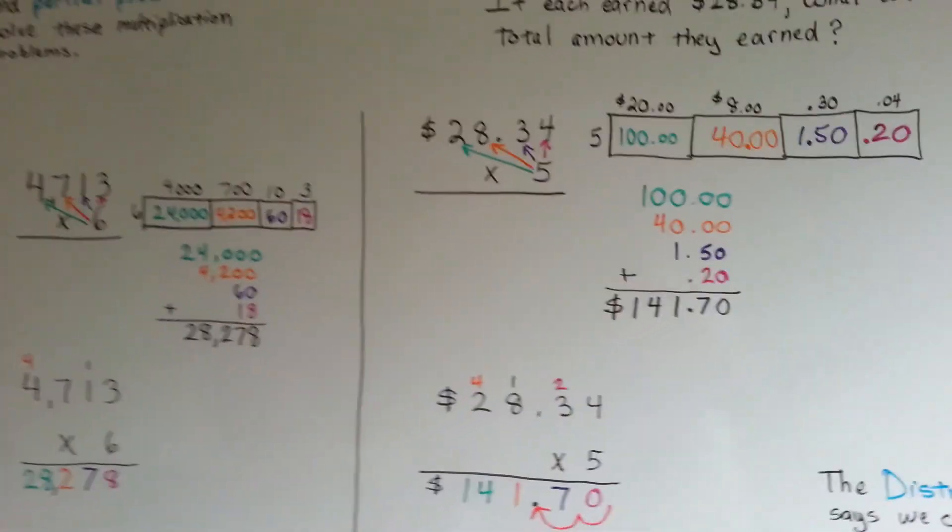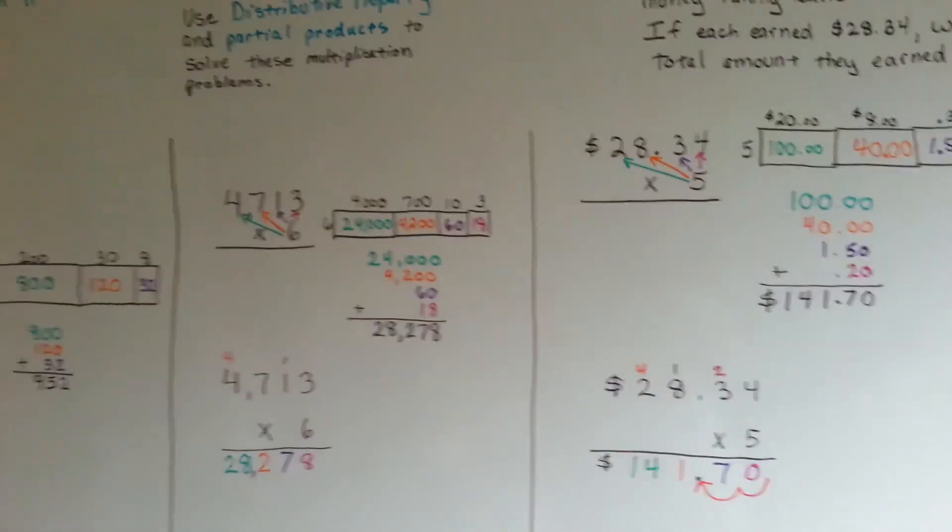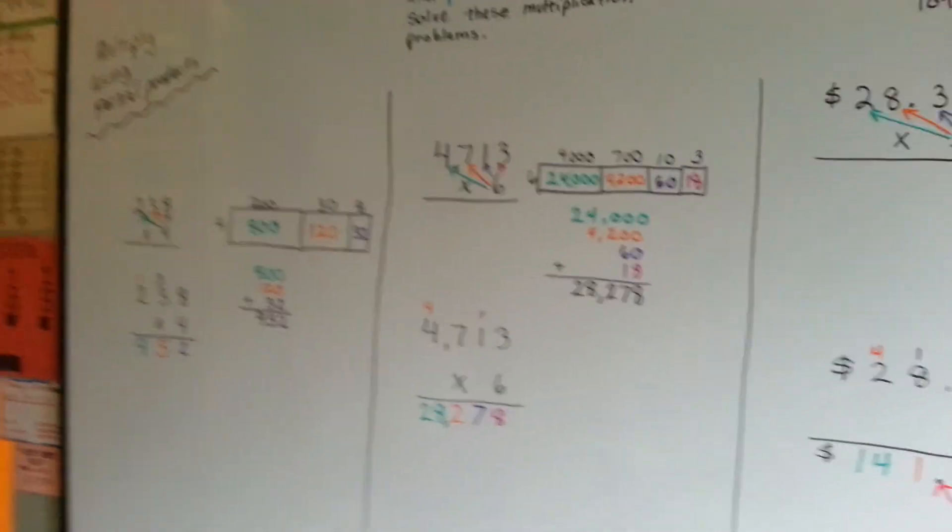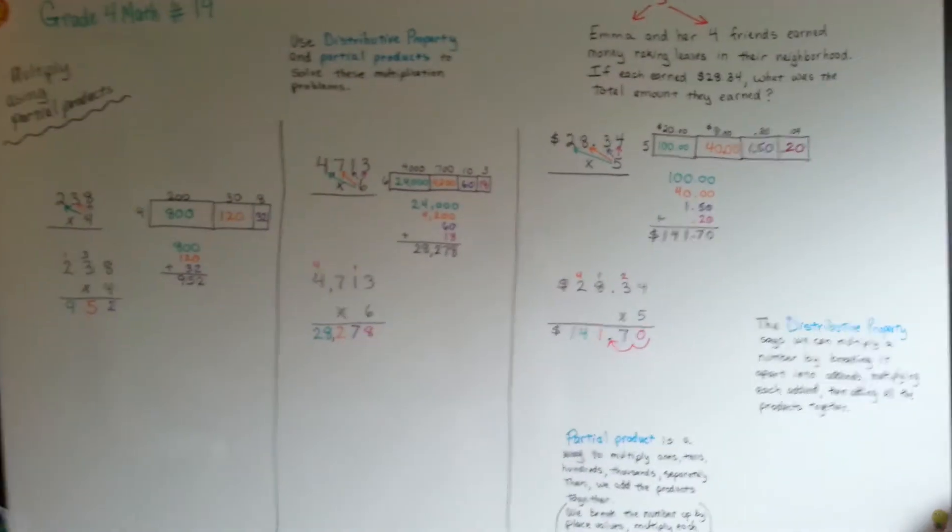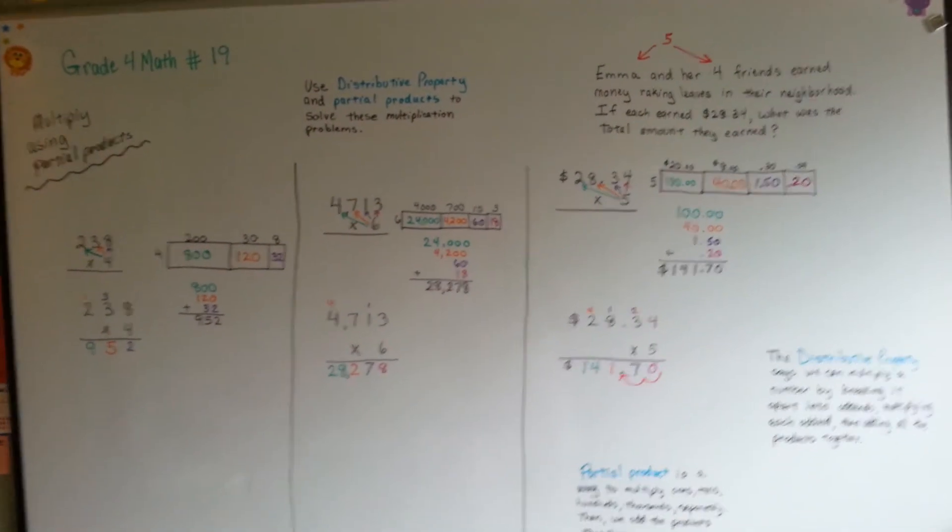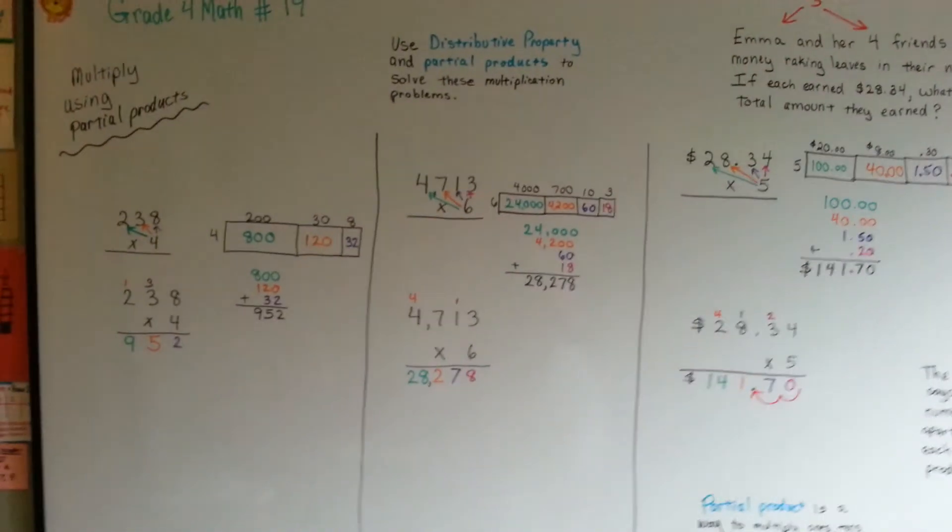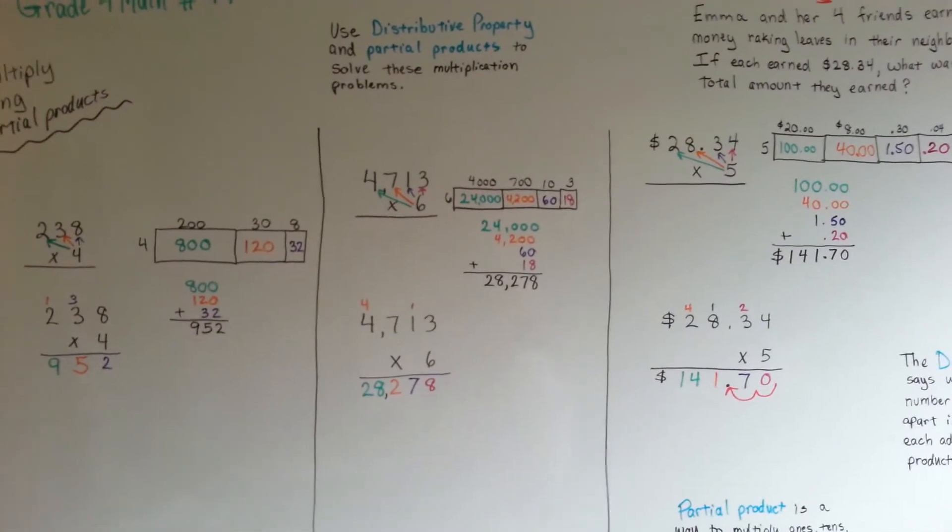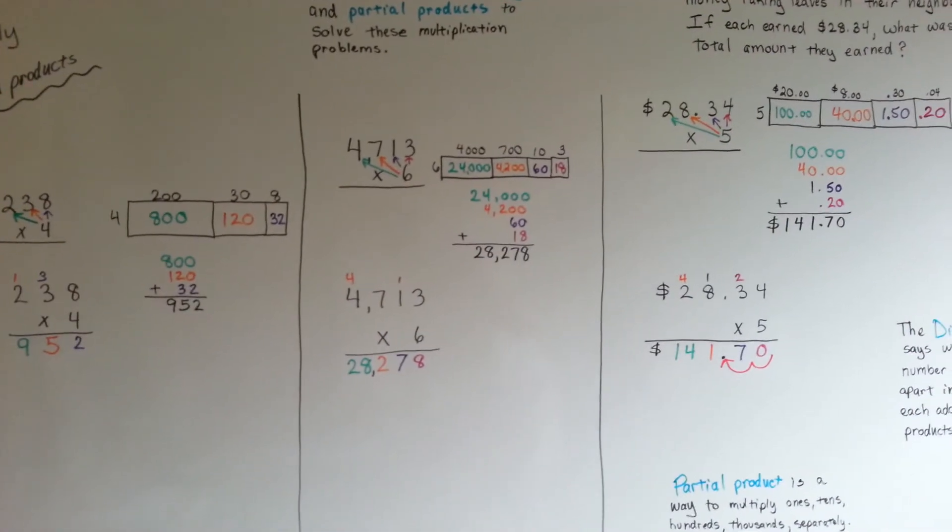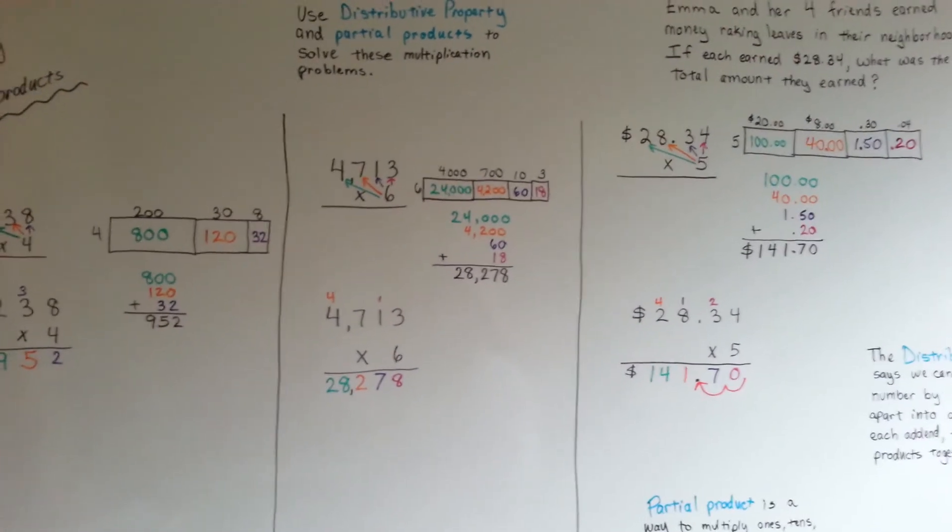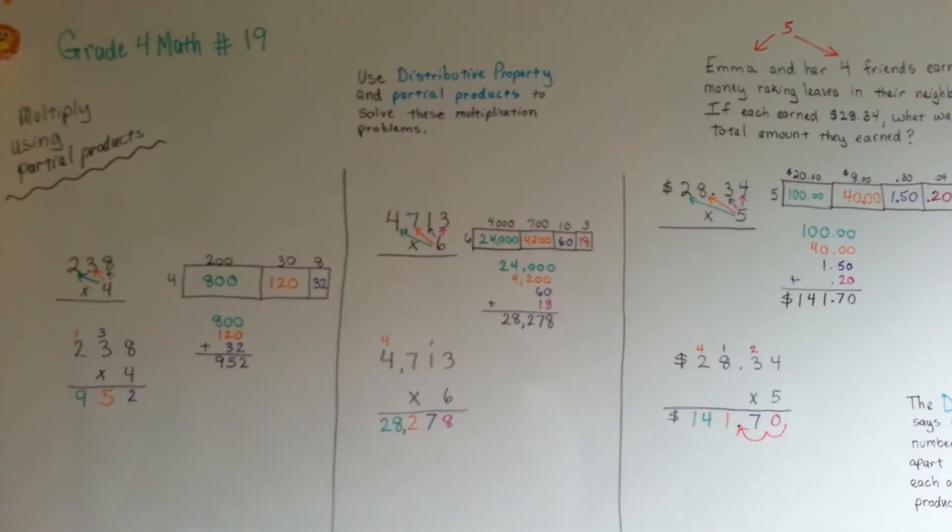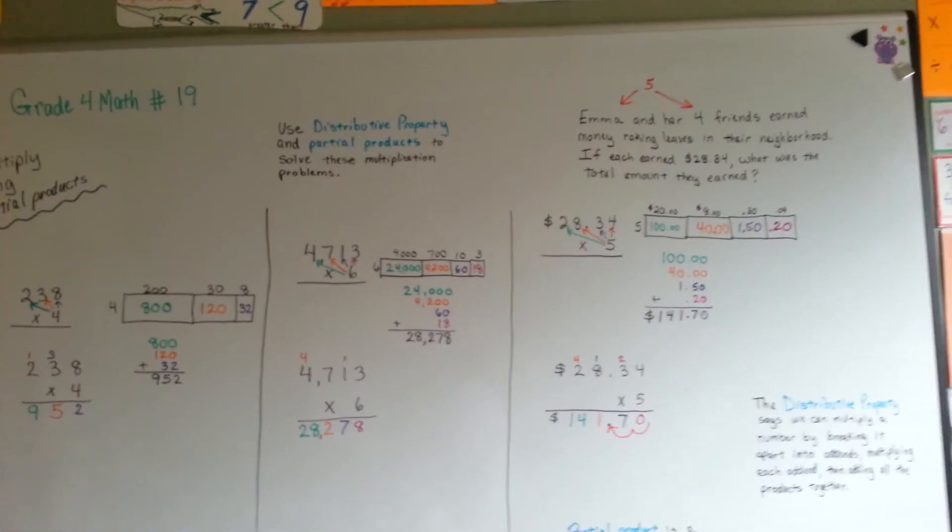So that's how we can use the distributive property and partial products to do multiplication. So we're going to continue working on this. Just remember to watch your place values. I'm going to do a little mental math next. I'll see you there. Bye.